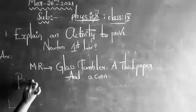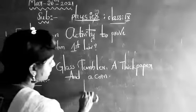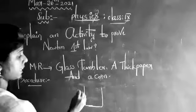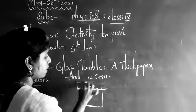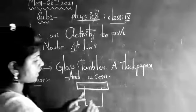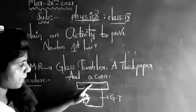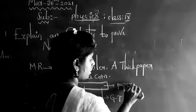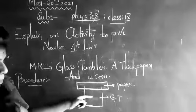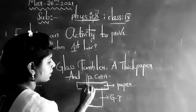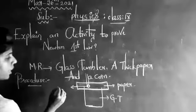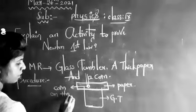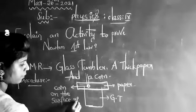Now let us focus on the procedure. Let us consider a glass tumbler. Now try to place ethyc paper on the surface of the glass tumbler. I am placing ethyc paper on the surface of the tumbler. Now I am placing this coin on the surface of the paper.